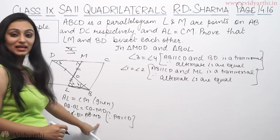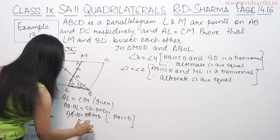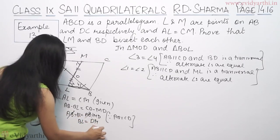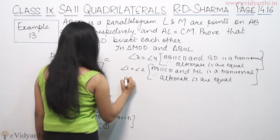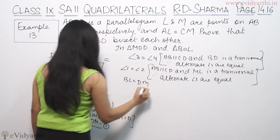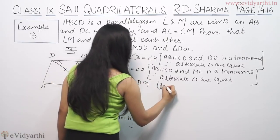So AB and CD are equal. AB or AD cancel ho jayega. We have minus BL equals minus MD. So minus pe minus cancel, we will get BL is equal to DM. Suppose this is the first equation.